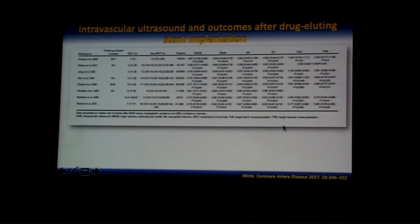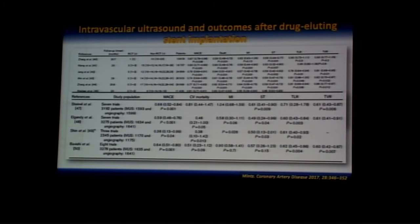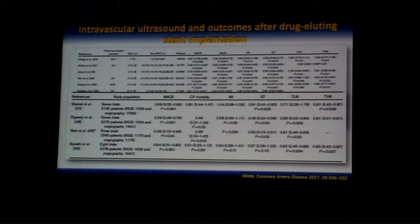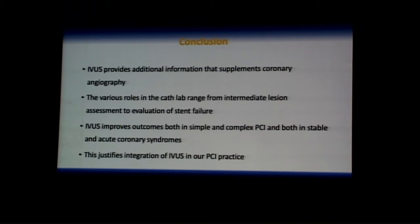There are eight meta-analyses combining registries and randomized trials. The four meta-analyses of DES randomized controlled trials all showed improvement in overall MACE, cardiovascular mortality, myocardial infarction, stent thrombosis, TLR, and TVR with IVUS-guided DES implantation. To summarize: IVUS provides additional information supplementing coronary angiography; its roles range from intermediate lesion assessment to evaluation of stent failure; IVUS improves outcomes in simple and complex lesions, stable and acute coronary syndromes — justifying integration of IVUS into routine practice.